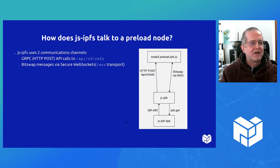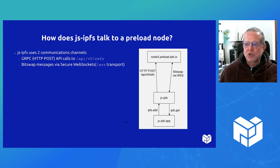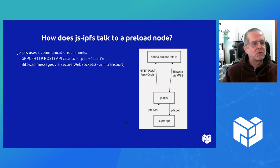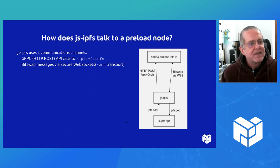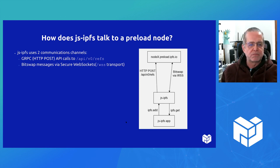I had to figure out how JSIPFS talks to the preload node. It connects via WebSocket — to BitSwap via the WebSocket transport. It also uses the API port and calls the endpoint API v0 refs. What that does is force the GoIPFS node to go to the DHT, get the block, get that CID, and you can tell it to get it recursively — so it will get all of the nodes that this node references through IPLD. So basically it has two connections: the HTTP port and the WebSocket port.